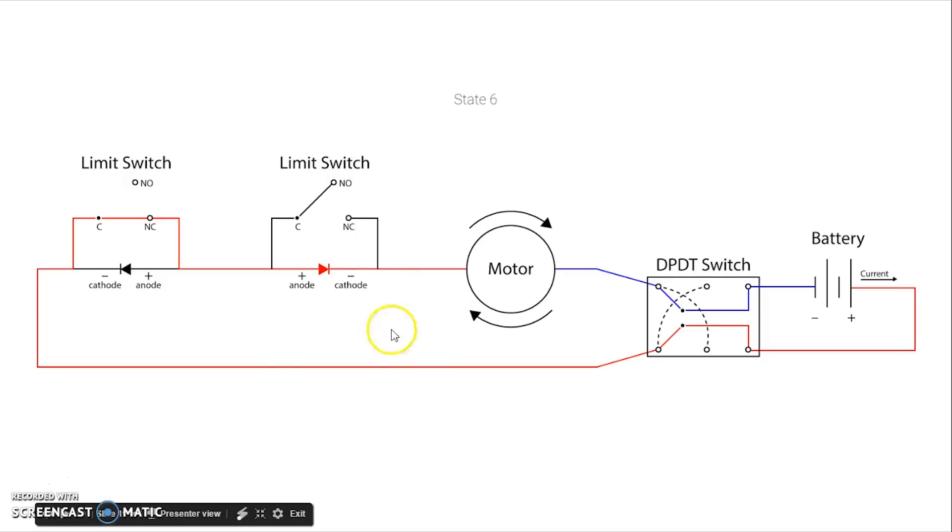And so again we need to throw our switch, our double pole double throw switch, to reverse the polarity of the current. And in this state now this diode will allow the current to flow in that direction and again that'll get us right back to where we started where you're traveling happily along in that original direction.